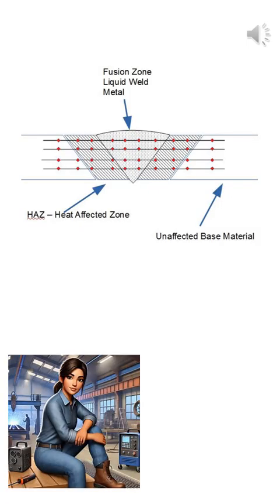Base metal. Finally, the base metal is the part of the joint that wasn't affected by heat at all. It retains its original microstructure, strength, and toughness, as long as the heat from welding didn't creep too far.